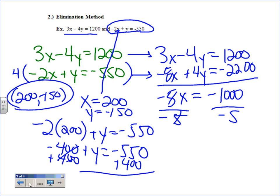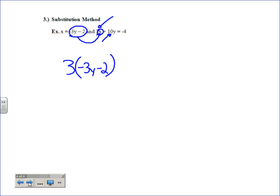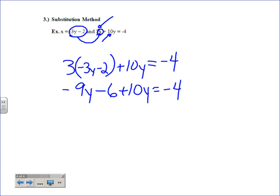Just like before when we replaced x with 200, now we're replacing x with negative 3y minus 2. Do we still have plus 10y? Yes. Equal sign? Yes. Negative 4? Yes. Notice what happened — we went from two equations with two variables to one equation with only one variable. Now solve: 3 times negative 3y minus 2 gives negative 9y minus 6, plus 10y equals negative 4. Combining: negative 9y plus 10y is one y, minus 6 equals negative 4. Add 6: y equals 2.